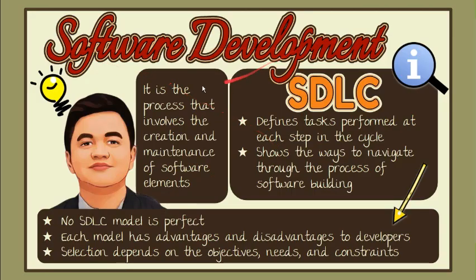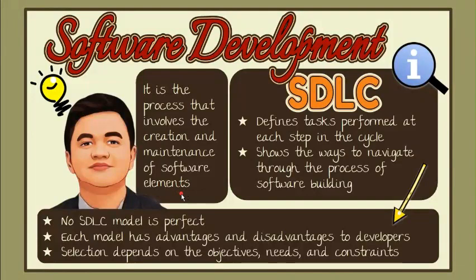Software development is the process of conceiving, specifying, designing, programming, documenting, testing, and bug-fixing, in order to create and maintain applications, frameworks, and other software components. This process, also known as Software Development Lifecycle or SDLC, defines tasks performed at each step in the cycle.